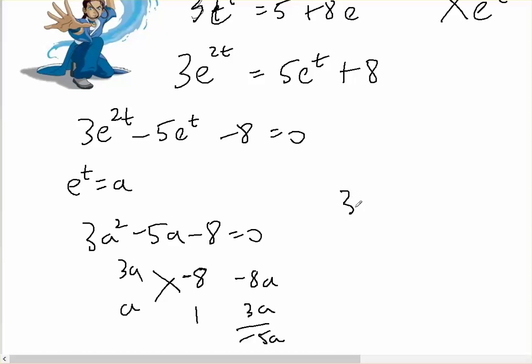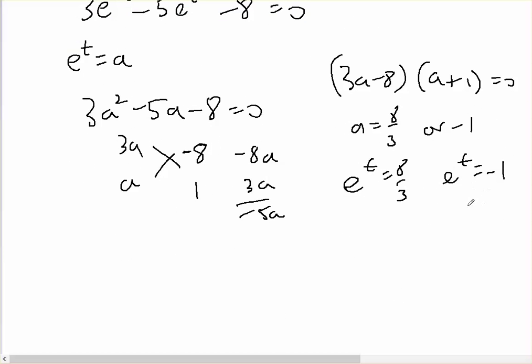So 3a - 8 and a + 1 = 0. So a = 8/3 or -1, which means e^t = 8/3 or e^t = -1. e^t is never negative, so there's no solution from this one, but t will equal log base e of 8/3 will be my answer for t.